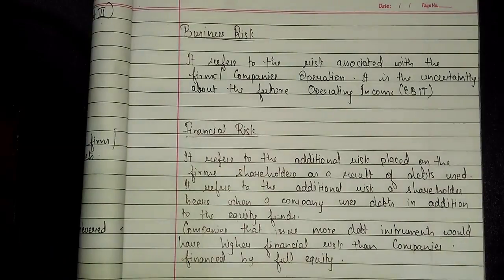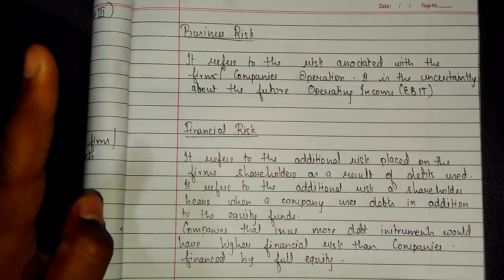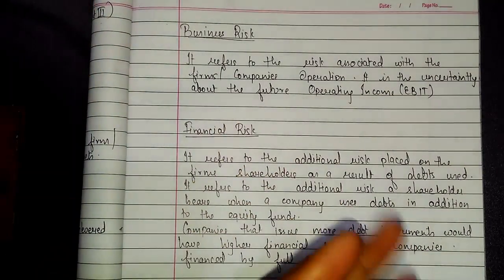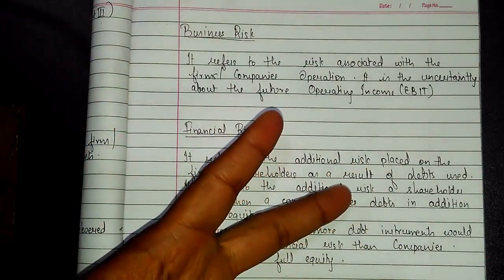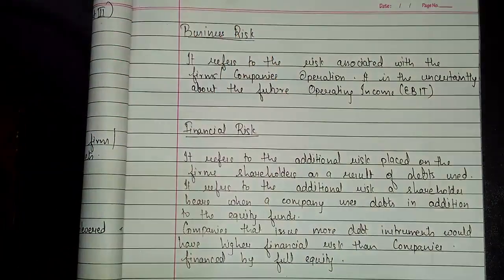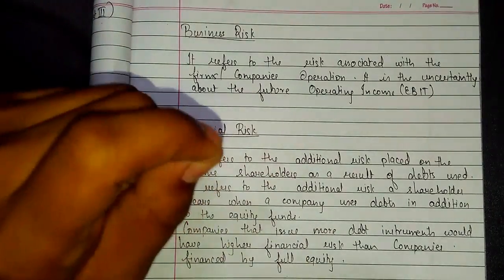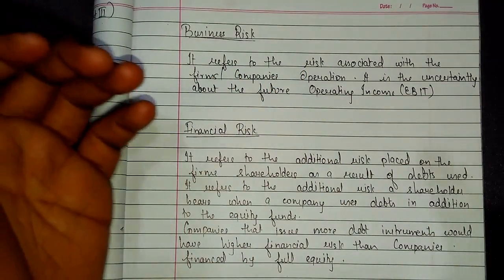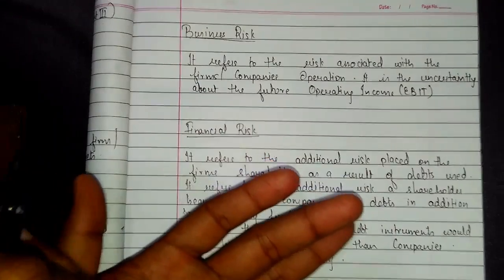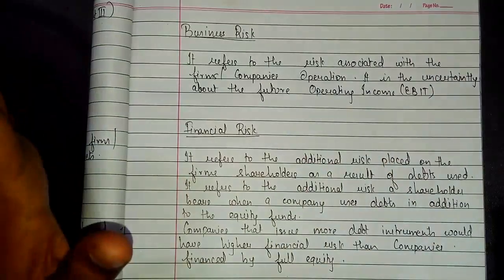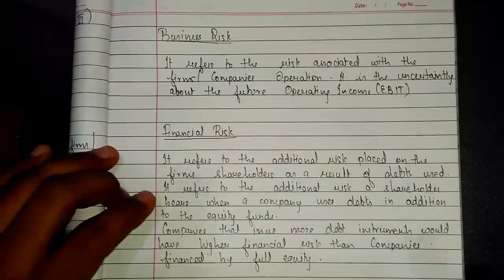To summarize: business risk refers to the revenue generated by carrying out the business, subtracted by the costs — both variable and fixed. Whichever amount remains is the operating income, also known as Earnings Before Interest and Tax. Business risk is basically the risk that the business earns a sufficient amount to cover its variable cost as well as its fixed cost.